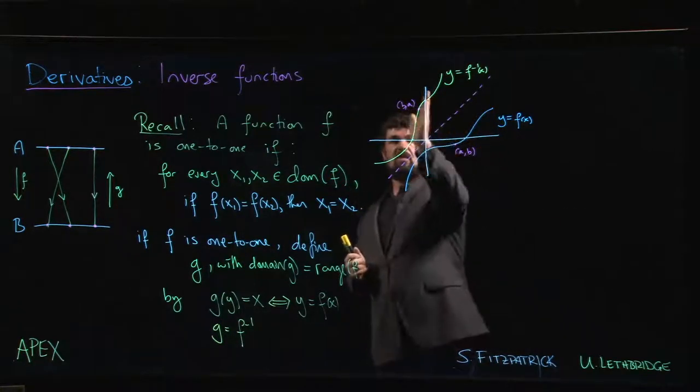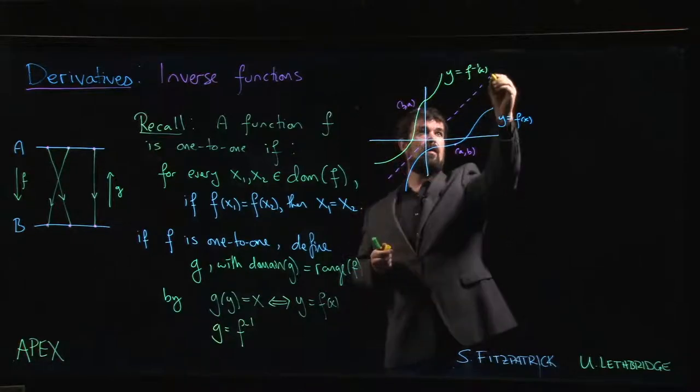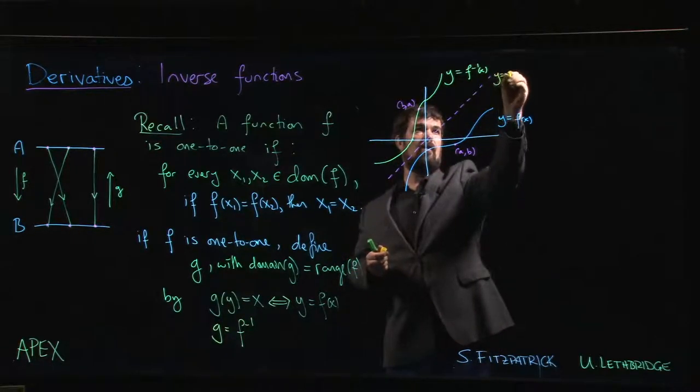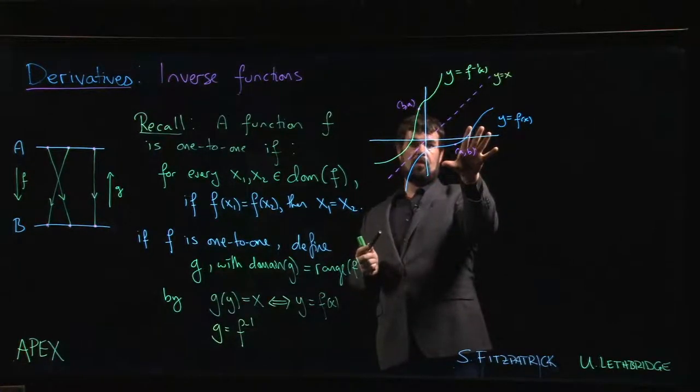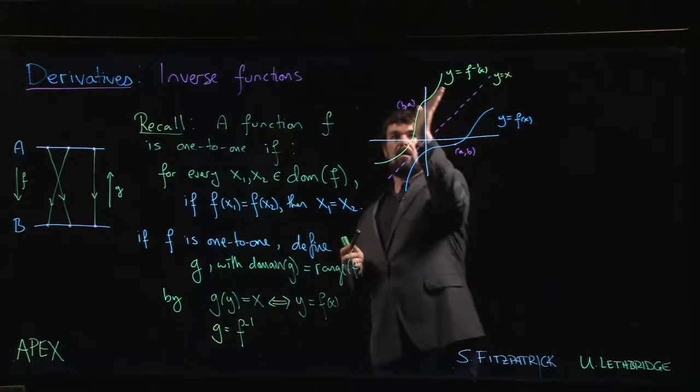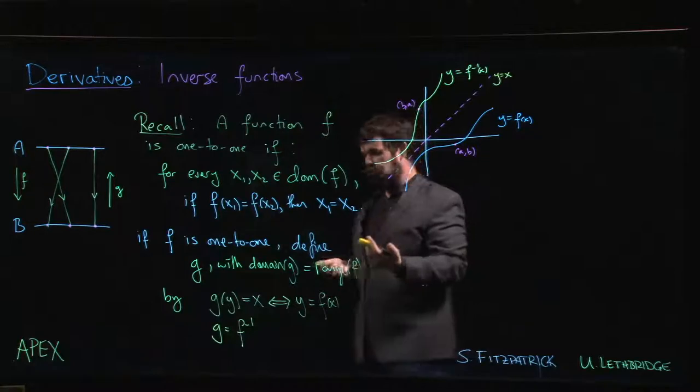And visually, you have this sort of reflection across this line. So this is the line y equals x here. And the graph of the inverse, you basically just take the original graph, you mirror it across the line y equals x, and that gives you the graph for the inverse.